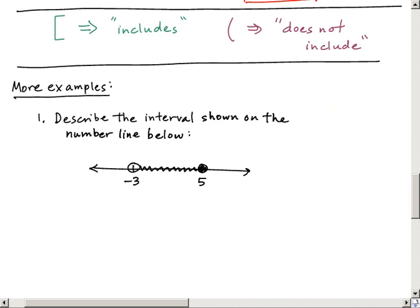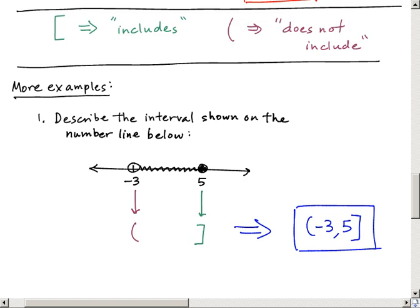So just as a quick example, suppose we want to describe this set of real numbers that this number line is showing here below. So we have an open circle at negative 3, which is indicating that that's not included, and we have a closed circle at 5, which is indicating that that's included. So the interval then would be described here with a parenthesis, negative 3, comma, 5, and then with a closed off bracket.